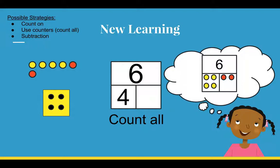which can go in the blank spot on the part-part-whole box, and my yellow ones can go there where the 4 is. So now I know that my missing part is 2.